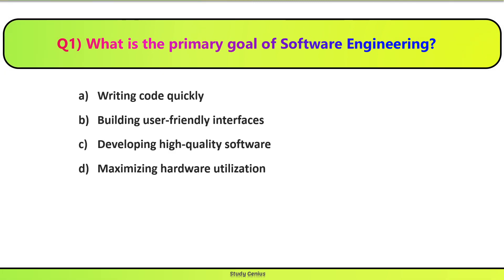Question 1. What is the primary goal of software engineering? Software engineering ka primary goal kya hai? A. Jaldi se code likhna. B. User friendly interfaces ko build karna. C. High quality software ko develop karna. Ya D. Hardware ko achse se utilize karna.